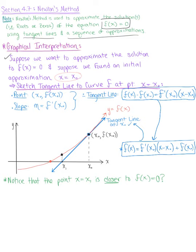Looking at this graph, we realize that the point where our tangent line crosses the x-axis is actually closer to the zero that we want. So what this tells us to do is use this x-intercept x₁ to approximate the zero.